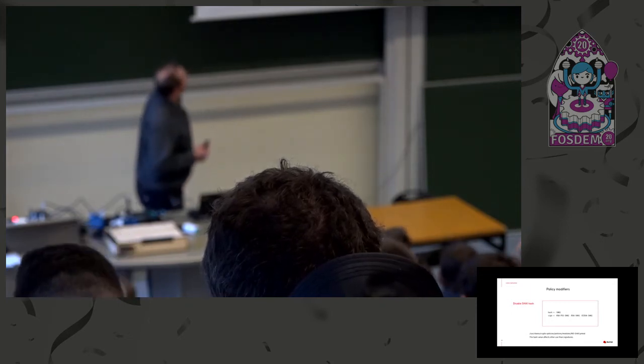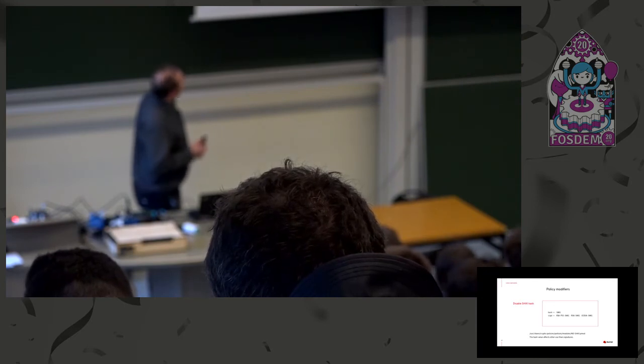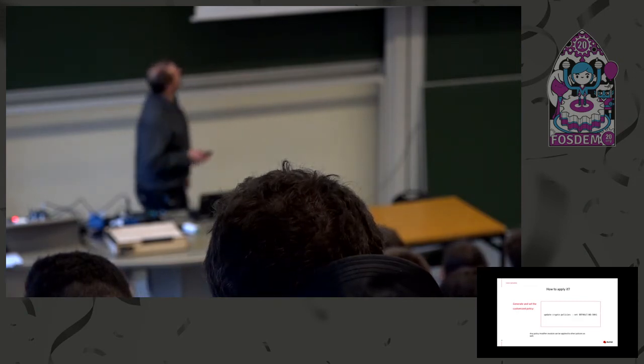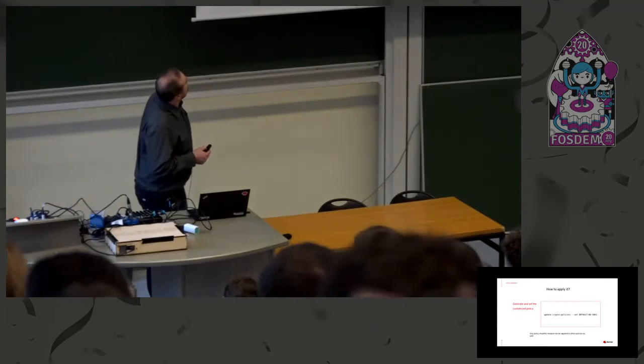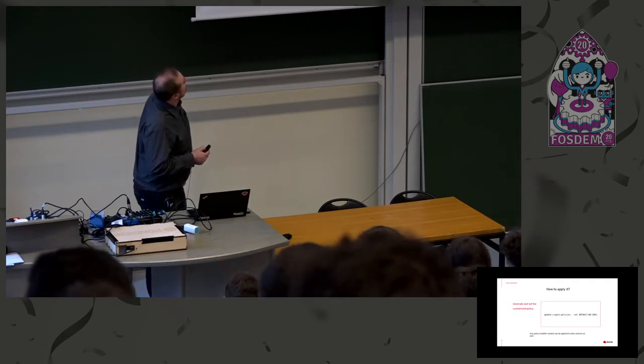Here are some examples of the modifiers. For example, you can disable the SHA-1 hash — you just apply these changes to the original policy. 'minus SHA-1' means remove SHA-1 from the list of hash algorithms. 'minus RSA-PSS-SHA-1', 'minus RSA-SHA-1', 'minus ECDSA-SHA-1' removes these signature algorithms from the list in the base policy. To apply this modifier, you append it with a colon — 'NO-SHA1' — appended to the base policy name, and the policy will be modified accordingly.